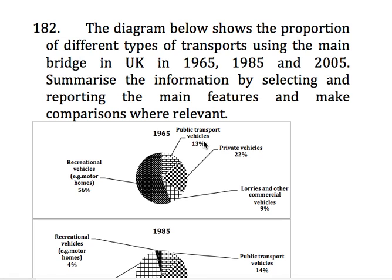My name is Kiran Makkar and today I am going to discuss with you a graph which has been seen in the past in the academic IELTS writing test. The diagram below shows the proportion of different types of transports using the main bridge in UK in 1965, 1985 and 2005. Summarize the information by selecting and reporting the main features and make comparisons where relevant.